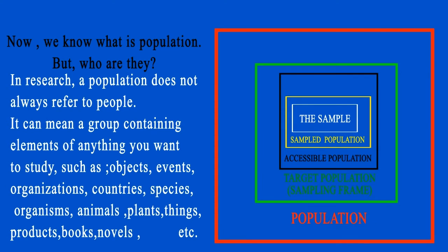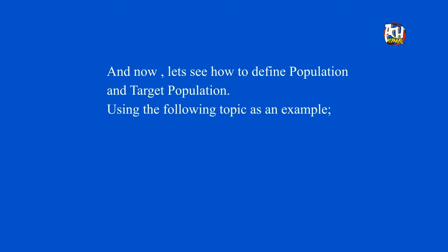This is what a population is, but who are they? In research, the population is not restricted only to people. It can be anything the researcher is interested in, such as countries, organizations, objects, products, events, animals, species, themes, novels, plants, newspapers, books, and so on.